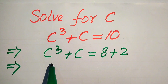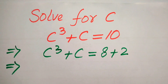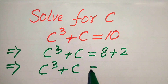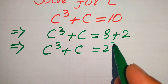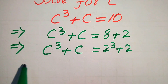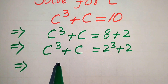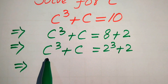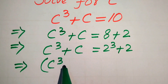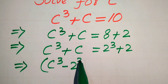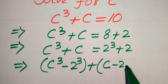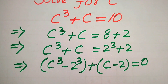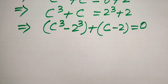One term is cubic and one term is of power 1. We need to write this term in prime factors form, and we know the prime factors of 8 are 2 cubed, plus 2. So we move these two terms to the left hand side: c cubed minus 2 cubed plus c minus 2 equals 0.